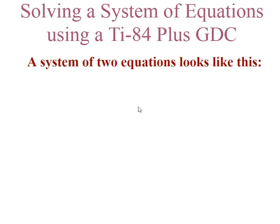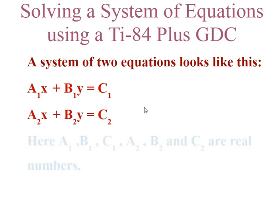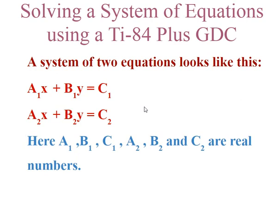A system of two equations looks like this: a1x plus b1y equals c1 and a2x plus b2y equals c2. Here, a1, b1, c1, a2, b2, and c2 are real numbers.